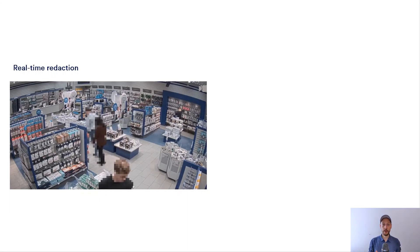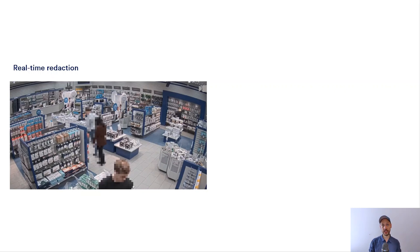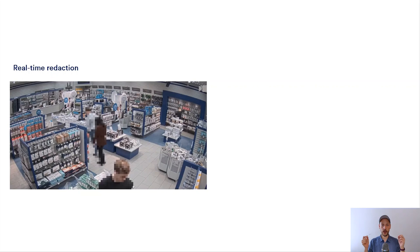We are redacting people or vehicles live as it happens, so the operator cannot identify these people anymore. But in case something is happening, there might be a way to unlock the original video — for example, with a four-eyes principle, with the OK of a supervisor. So this is really live, as it happens when you're doing video monitoring. And this is a very important distinction because it's a totally different kind of technology that you need if you really have to make sure that you are redacting as it happens live.